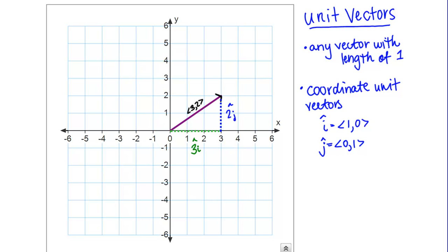That's what I've drawn there in that green dotted line. Now, 2j is my blue dotted line here and you'll notice that points purely in the y direction. It's 2 times the coordinate unit vector j. What I can actually do is I can say that the vector r equals 3i plus 2j.